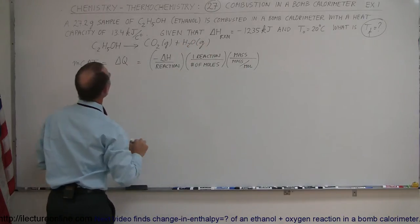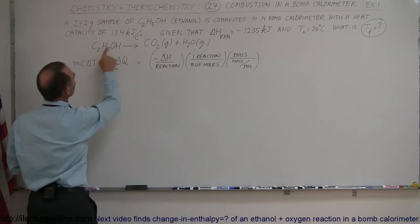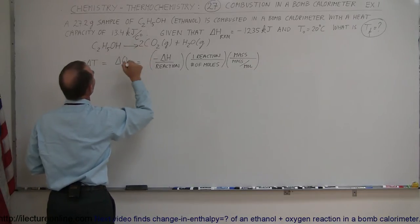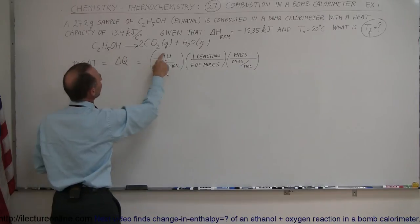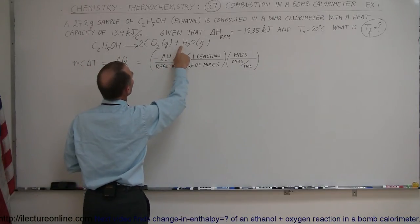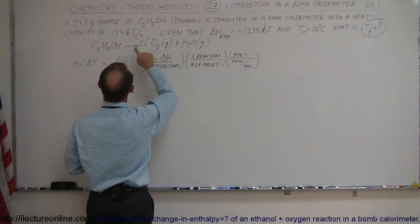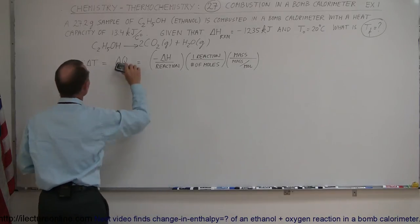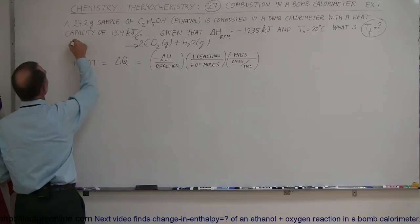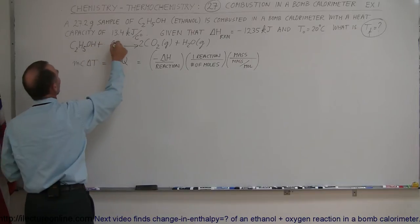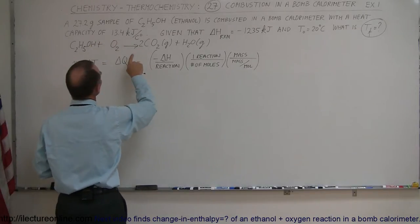Now we have to balance the equation. Notice we have two carbons, that means we need two of these. We have 5 plus 1, that's 6 hydrogens, so we need 3 waters. We're missing something on the left side because you're not going to have a very good combustion reaction unless you also have oxygen added to this reaction.